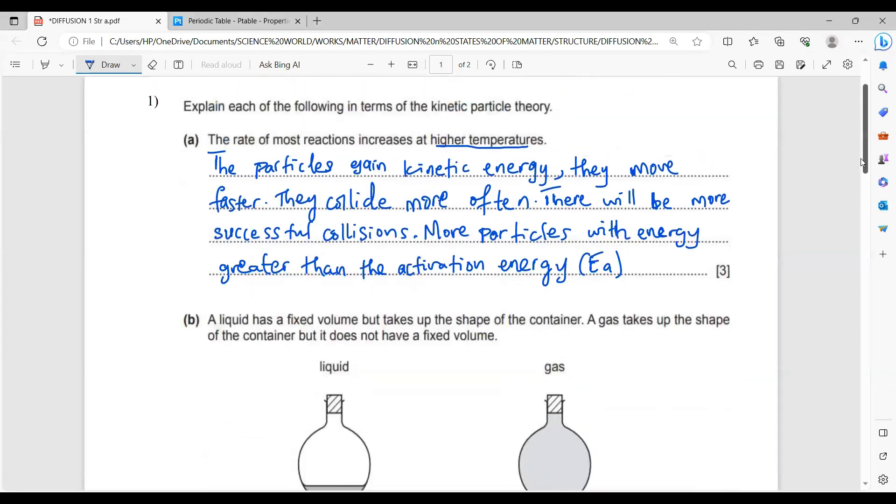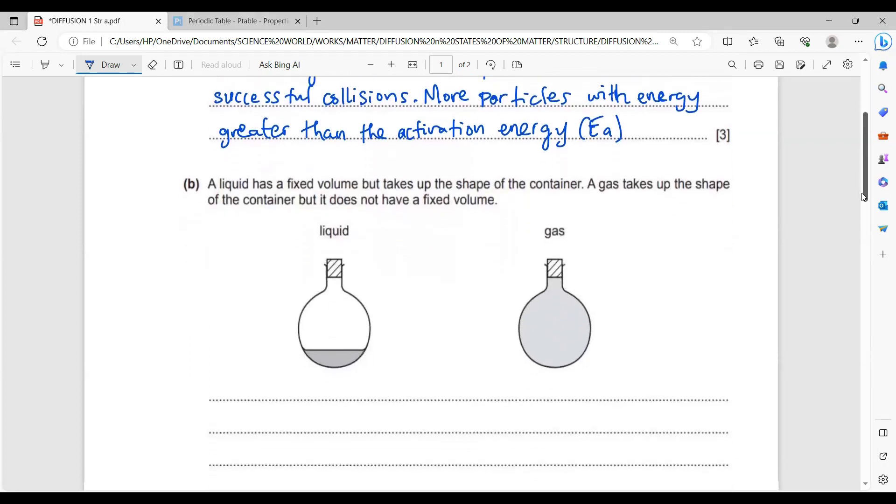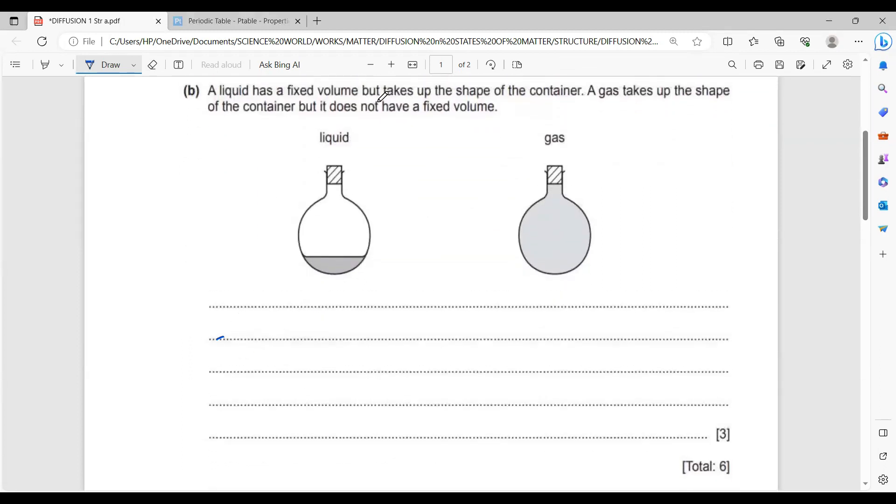Now, let's move to the second part. The B part says: A liquid has a fixed volume but takes up the shape of the container. A gas takes up the shape of the container, but it does not have a fixed volume. What's common between the liquid and the gas particles here is that they take up the shape of the container. Why would they take up the shape of the container?